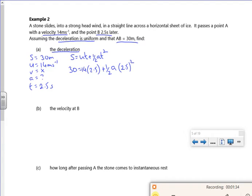So 30 is 14 times 2.5 plus 0.5 times A times 2.5 squared. So 14 times 2.5 is 35. If I take the 35 over, I've got minus 5. 2.5 squared is, I think that's 6.25, and then if we halve it, it's 3.125.